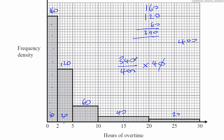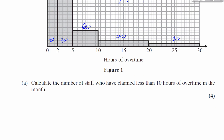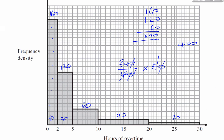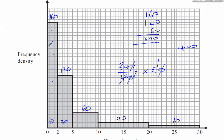We can say that 340 out of 400 squares represent our 40 employees who claimed less than 10 hours overtime. That gives us 340 divided by 400 times 40, which equals 34. So there are 34 employees that claimed less than 10 hours of overtime. Essentially, we're working out the areas of each bar in terms of little squares: 340 squares from 10 and below out of 400 squares altogether.